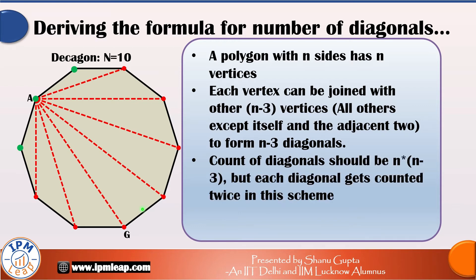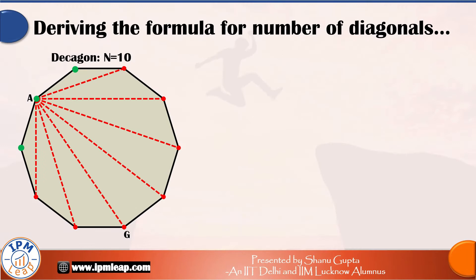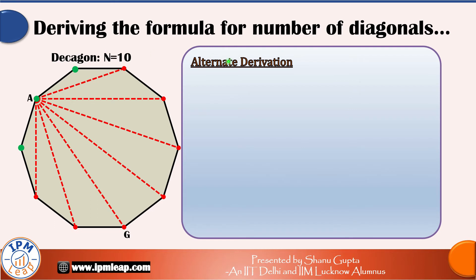Let's extend this concept for a polygon of n sides. The number of diagonals in a polygon of n sides will be n into n-3 divided by 2. Now I am going to give you an alternate and much easier derivation of the same formula.